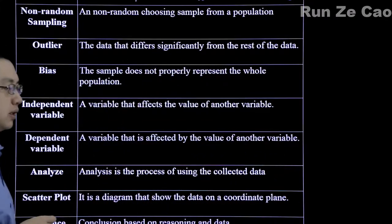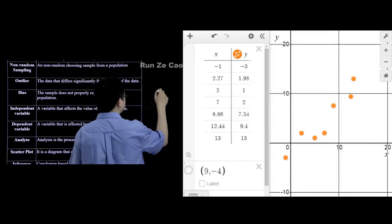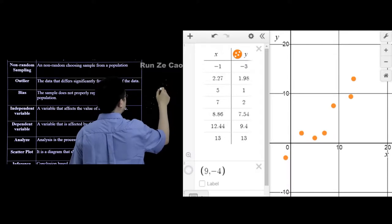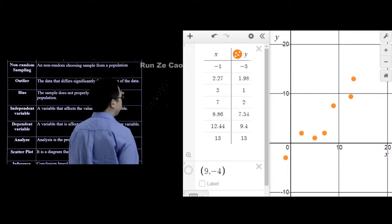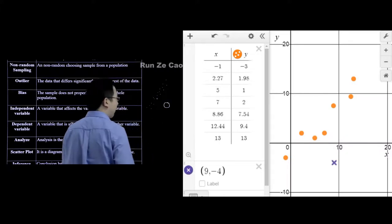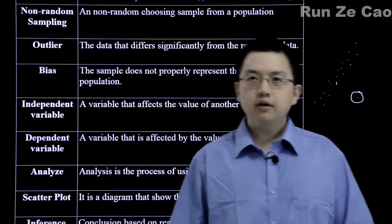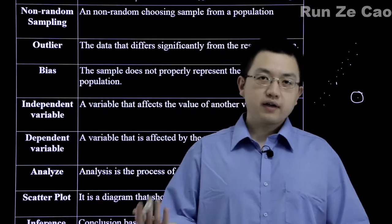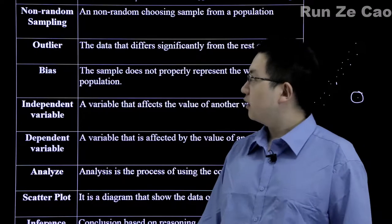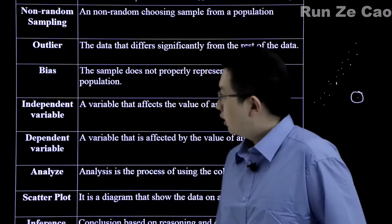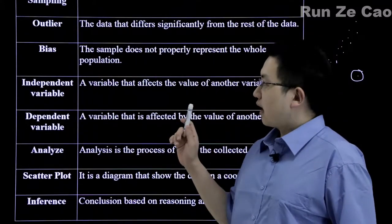An outlier: when you get your data and you plot it and there's a pretty clear trend, and then there's one that's not on the trend — that would be an outlier. Outliers can be due to various factors, and sometimes a question will ask you to explain the possibility of why there might be an outlier. The point is that it differs a lot from the trend of the rest of the data.